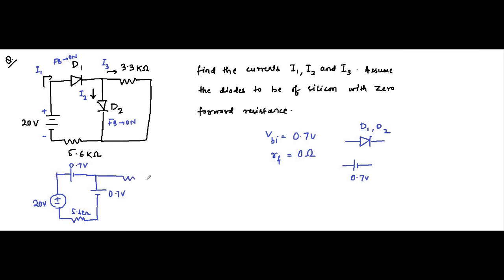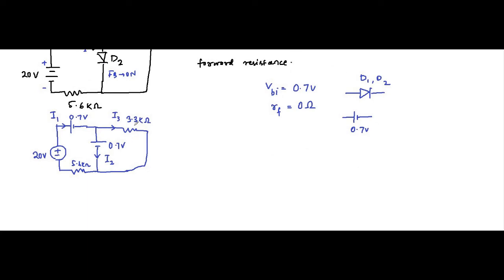The redrawn equivalent circuit has 20 volt source, 5.6 kilo ohm, and 3.3 kilo ohm resistors along with the 0.7 volt built-in potentials for each diode. The voltage across the 3.3 kilo ohm resistor is simply 0.7 volt — there is no other voltage in that branch. So I3 equals 0.7 volt divided by 3.3 kilo ohm, which is 0.212 milliampere.